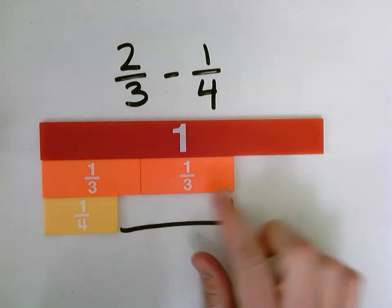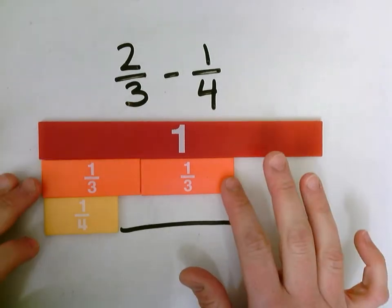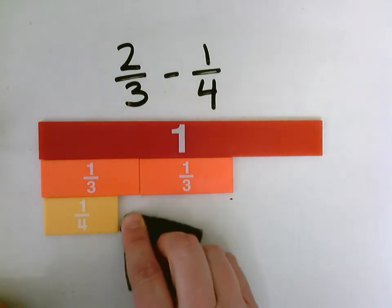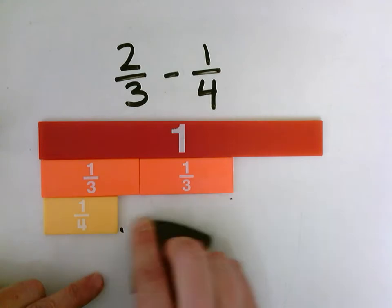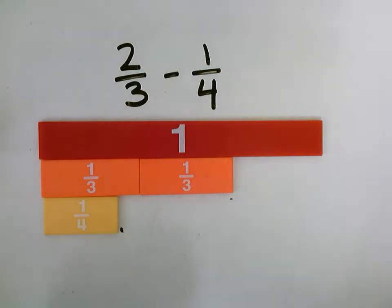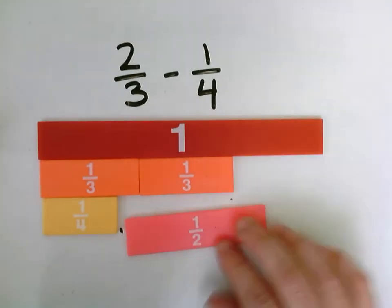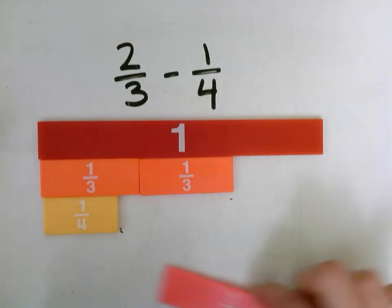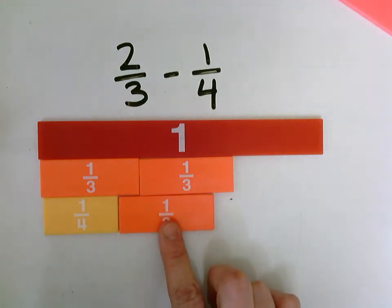All right, so I need to find fractions with the same denominator, fraction tiles that are the same color to fill in this space between the one-fourth and the two-thirds. So I like to start with my largest denominator first. One-half, no, one-half is too large. We cannot do one-half. One-third is not going to work, too small.